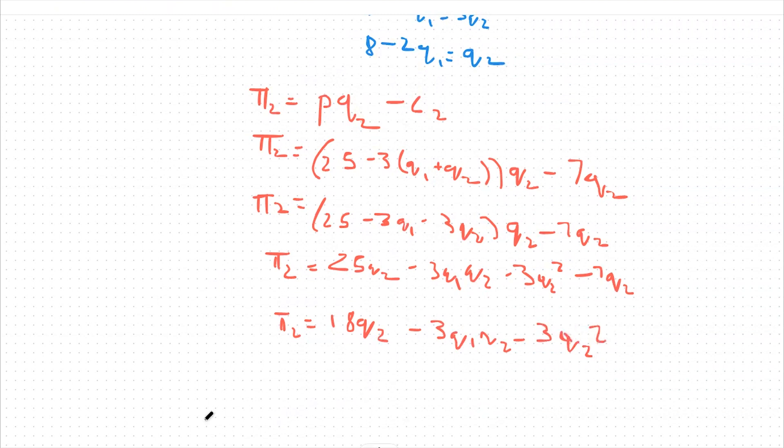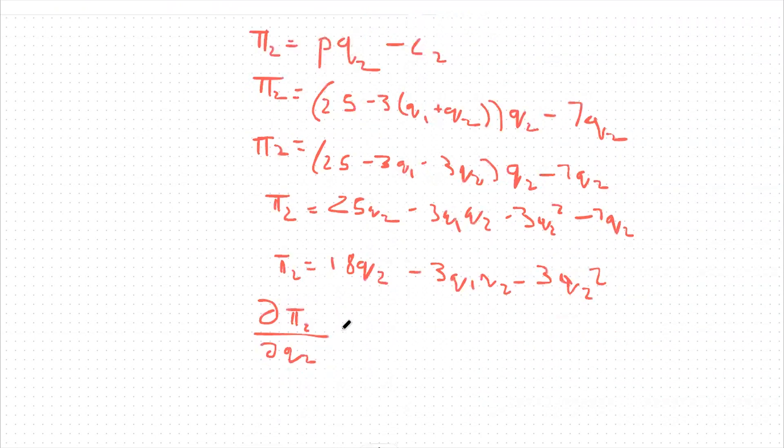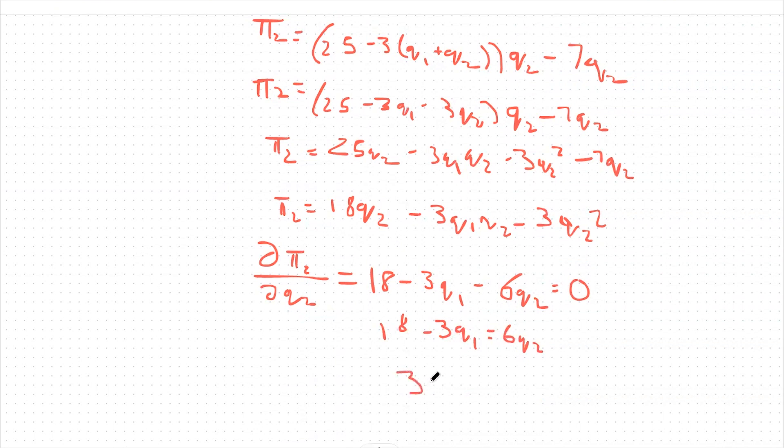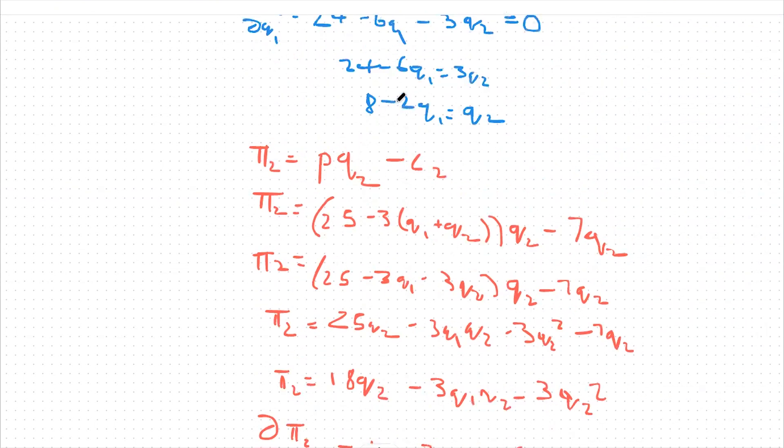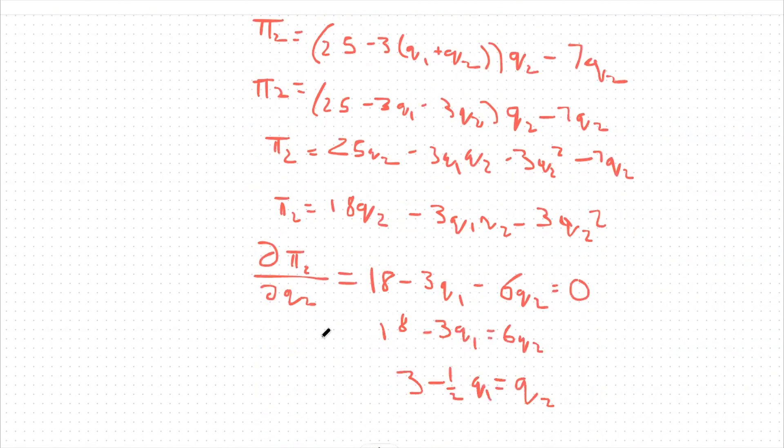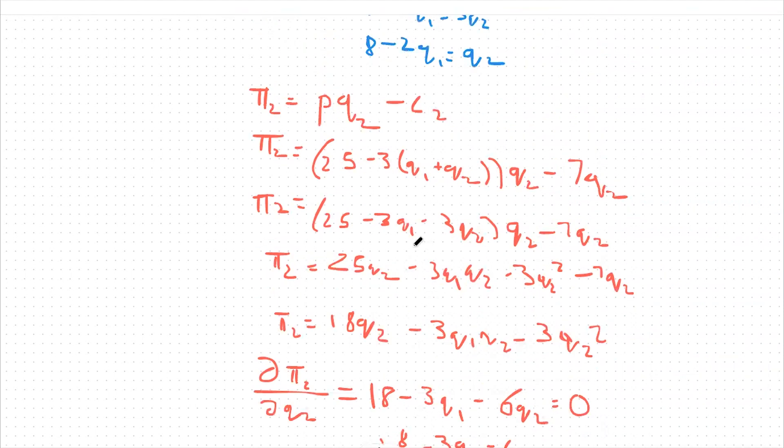And then again, we take the derivative of this profit function with respect to now q2 to maximize our profits. We're going to set that equal to 0. So we're left with 18 minus 3q1 minus 6q2. Set that equal to 0. And then I'm going to switch around and solve for q2 again. So I'm going to say 18 minus 3q1 equals 6q2. Divide both sides by 6. We get 3 minus 1.5q1 equals q2. Now we have both profit functions in terms of q2. So from there, I can set both of these equal to each other.